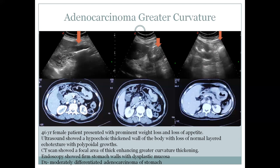A 46-year-old female patient presented with significant weight loss and loss of appetite. Ultrasound showed a thickened hypoechoic gastric wall with loss of normal mural architecture, and high-attenuation lesions were seen in the liver. CT scan showed thick enhancement of a non-distensible stomach. Endoscopy showed thickened gastric walls and the diagnosis was a well-differentiated gastric carcinoma.